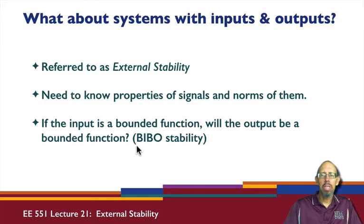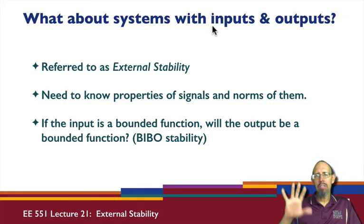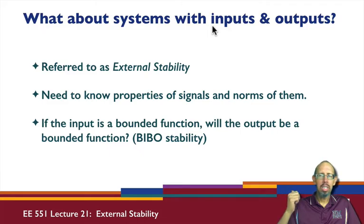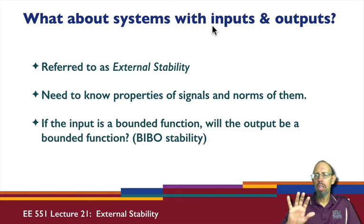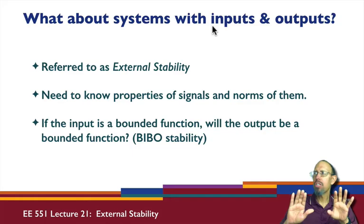Notice that with asymptotic stability or exponential stability, we were looking at systems without inputs. Here we're looking at systems with inputs. In general, a system has a natural response and a forced response. Asymptotic stability, exponential stability, and quadratic stability are all associated with the natural response of the system — they essentially ignore the input.